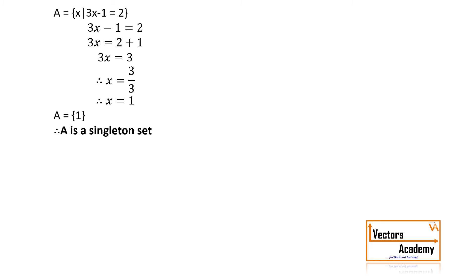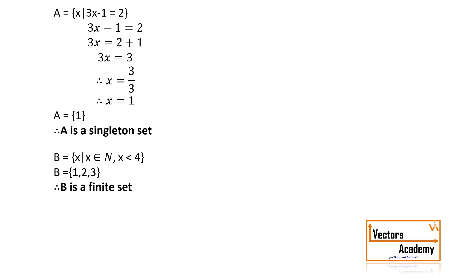Let's take another example. Set B contains x such that x belongs to natural numbers and x is less than 4. Natural numbers start from 1 and go on till infinity: 1, 2, 3, 4, and so on. Out of these, the natural numbers less than 4 are just three numbers: 1, 2, and 3. So B contains these three numbers, and it is a finite set.